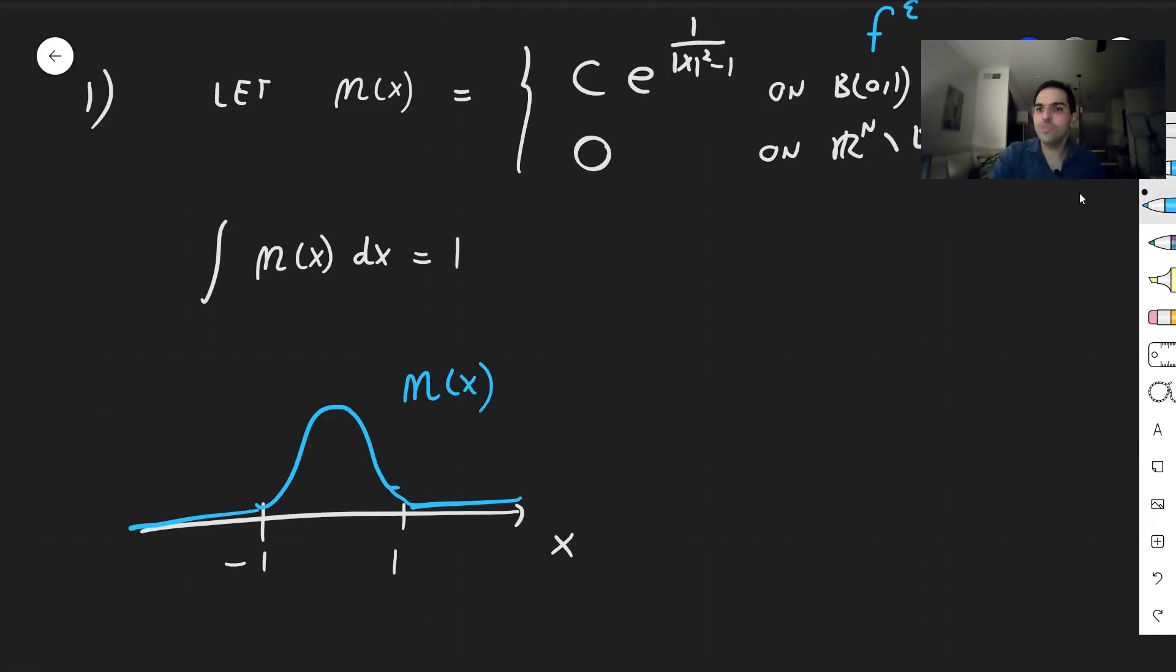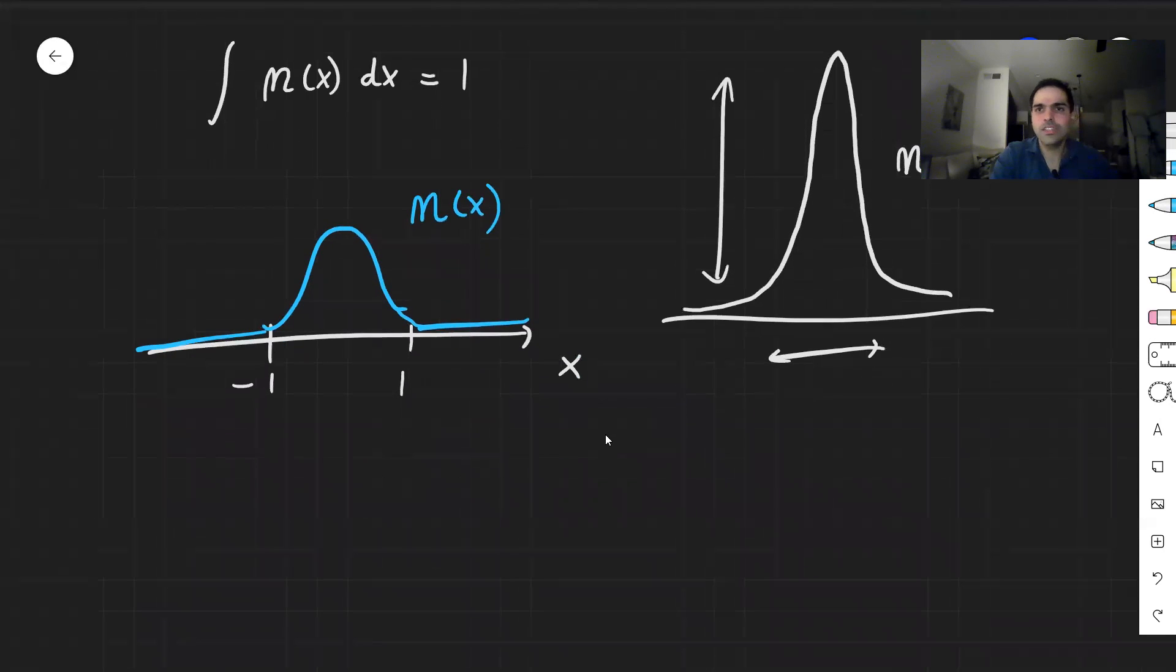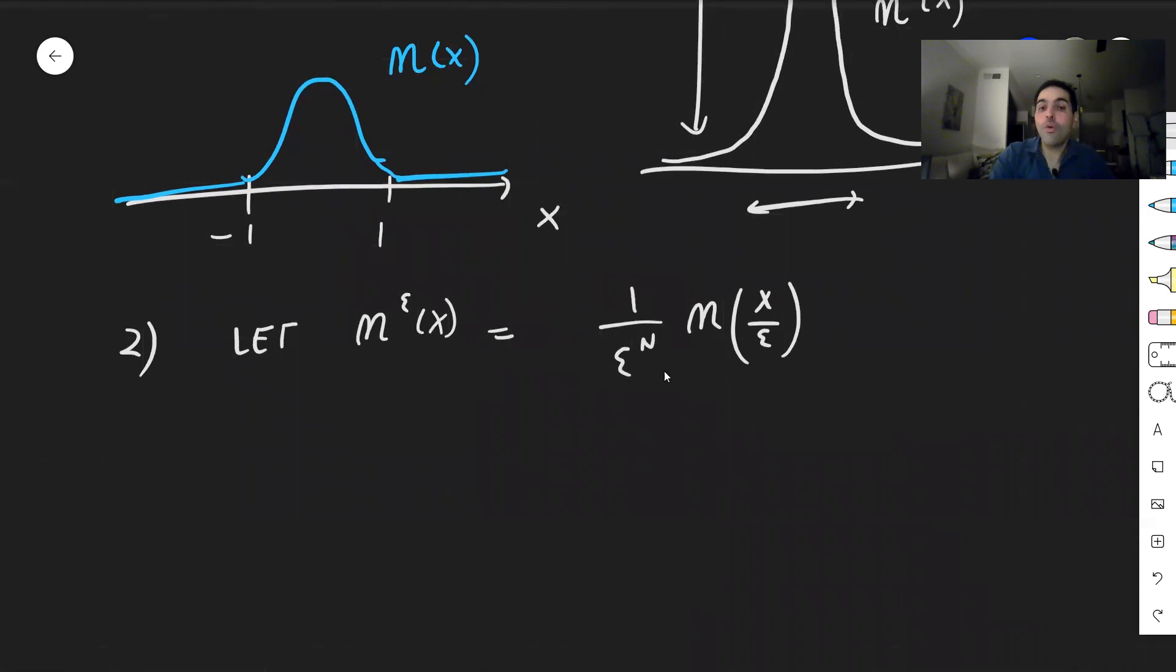And the main idea is what we would like to do, we would like to turn this into a Dirac delta, which means we would like to make this narrower and kind of higher in some sense. So this should be smaller, but then this should be big. And the way we're going to do this is by introducing this parameter epsilon. So let eta epsilon of x simply be the following: eta of x over epsilon divided by epsilon to the n, which makes it taller. And there is a reason for those two constants.